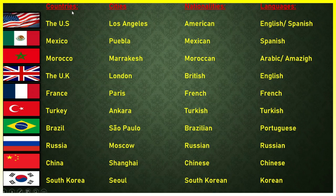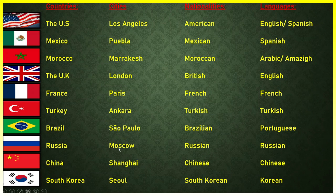As I said in the last video, we studied countries, cities, nationalities, and languages. Let's remind you of this. Countries: the US, Mexico, Morocco, the UK, France, Turkey, Brazil, Russia, China, South Korea. Cities: Los Angeles, Puebla, Marrakesh, London, Paris, Ankara, São Paulo, Moscow, Shanghai, Seoul. Nationalities: American, Mexican, Moroccan, British, French, Turkish, Brazilian, Russian, Chinese, South Korean. Languages: English, Spanish, Arabic, French, Turkish, Portuguese, Russian, Chinese, Korean.